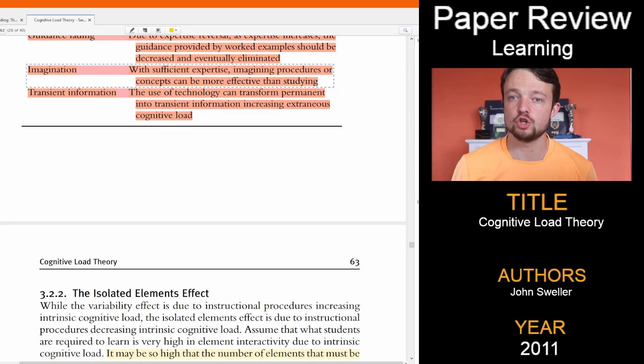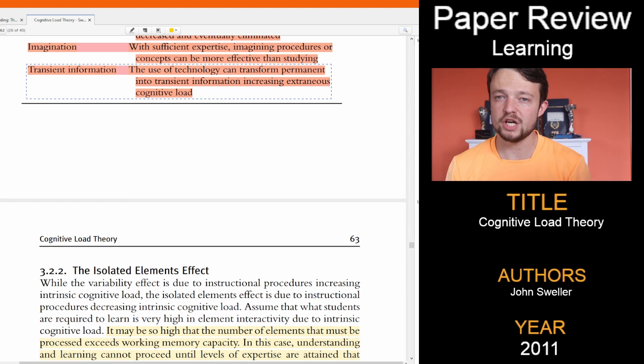The imagination effect suggests that those with expertise in a topic can imagine procedures or concepts which can help with understanding. So in the chess example, the grandmaster players may imagine a few board moves in advance to help them solve the problem using their memory store. The transient information effect suggests offloading information to something like technology can increase extraneous load because you can't remember information from your biological memory, making it harder to create connections to grasped concepts for deeper understanding.